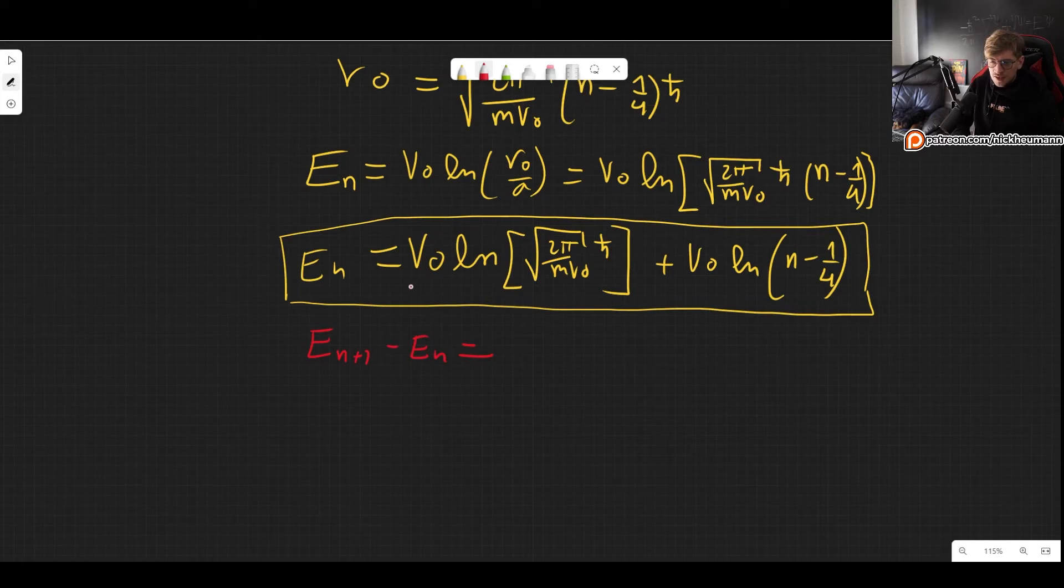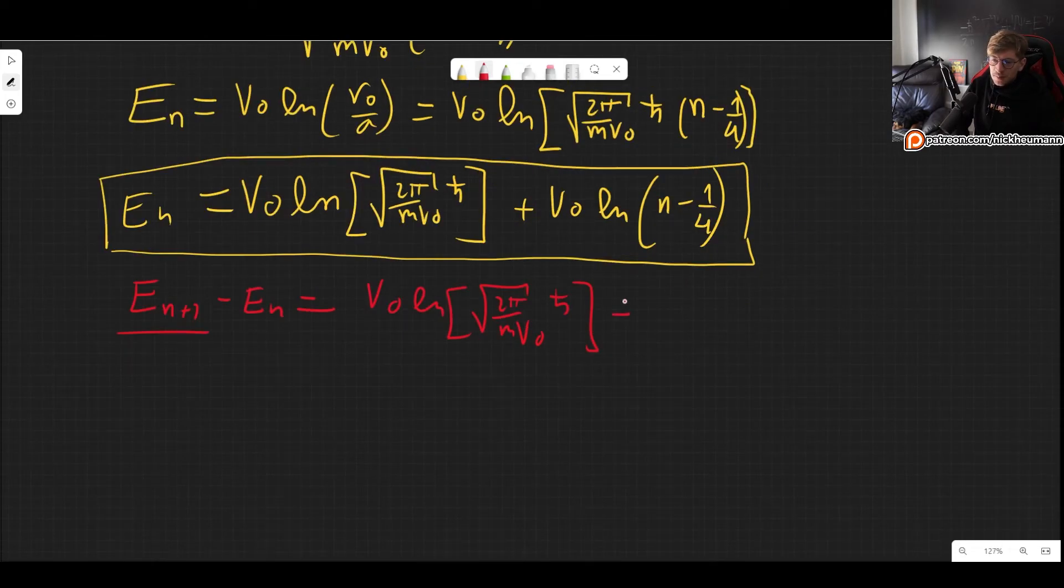This is going to make things much much better because if we want to find the spacing between two levels that means that we want to know E_{n+1} minus E_n. What is this? So when we do this we get V0, plugging in for this the constants that don't depend on n, and then we have plus V0 natural log of n but this time n is n plus one so we get n plus one minus one fourth.